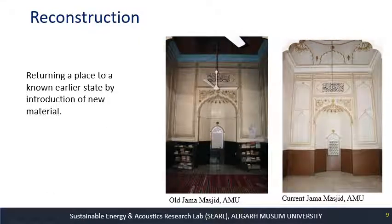Another process is reconstruction, which means returning a place to a known earlier state by introducing new material. Looking at the interior of the same building, the white walls you see are actually Araish plaster. A new type of Araish plaster very similar to the original was used and applied on the walls. The paints used before were changed — in the before image, the bottom half of the wall was green, and afterwards a brown-colored PVC wall panel was applied.